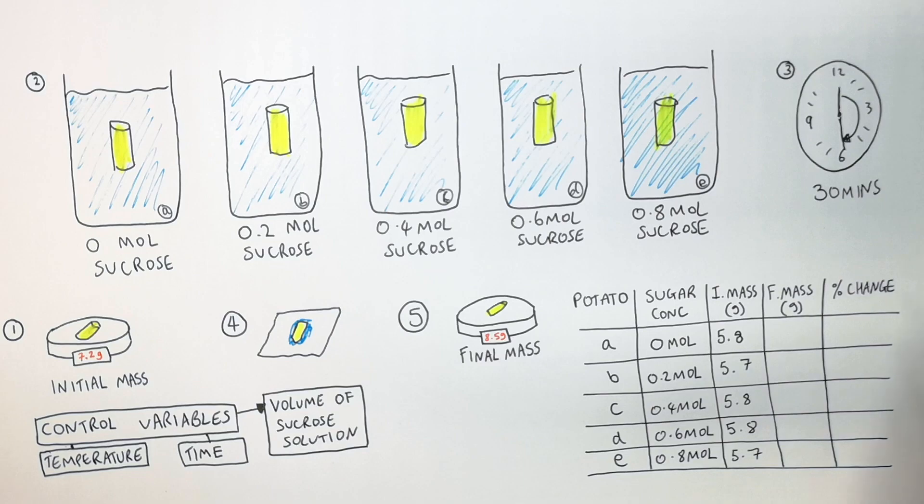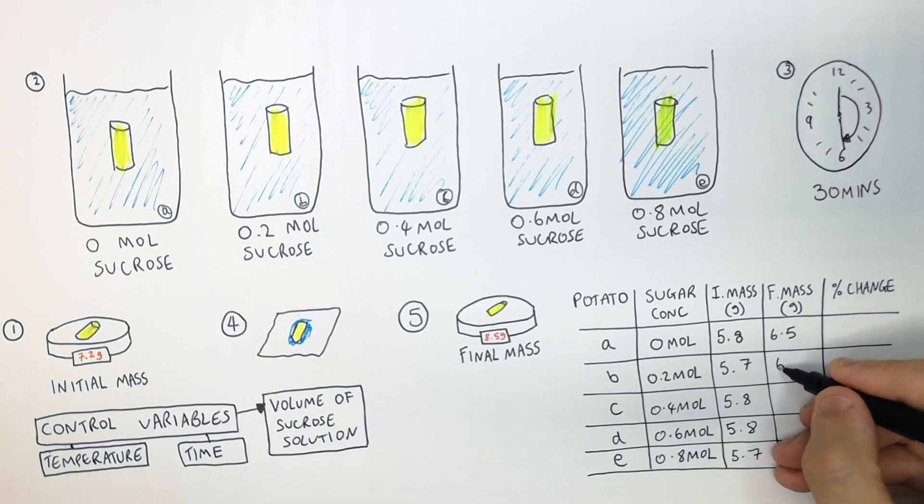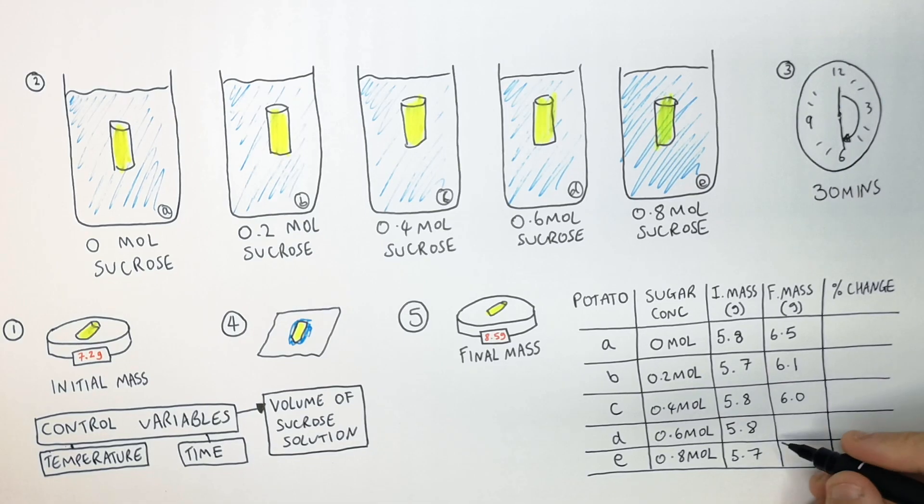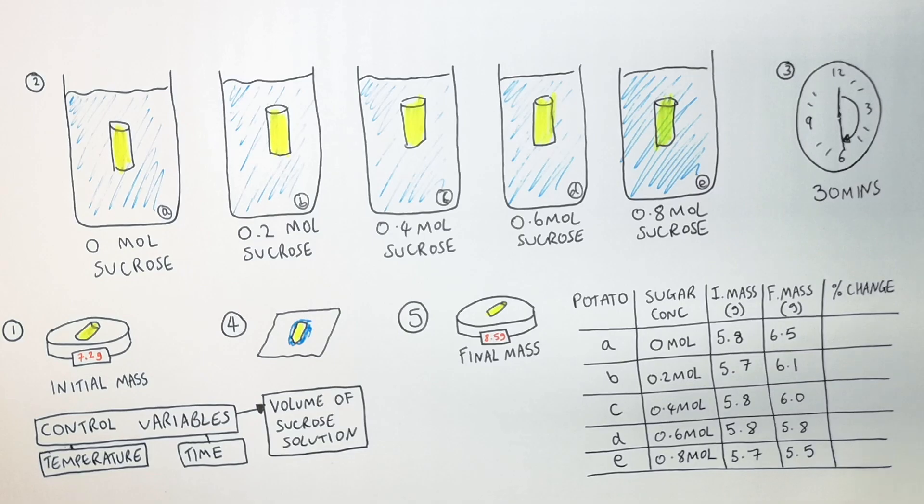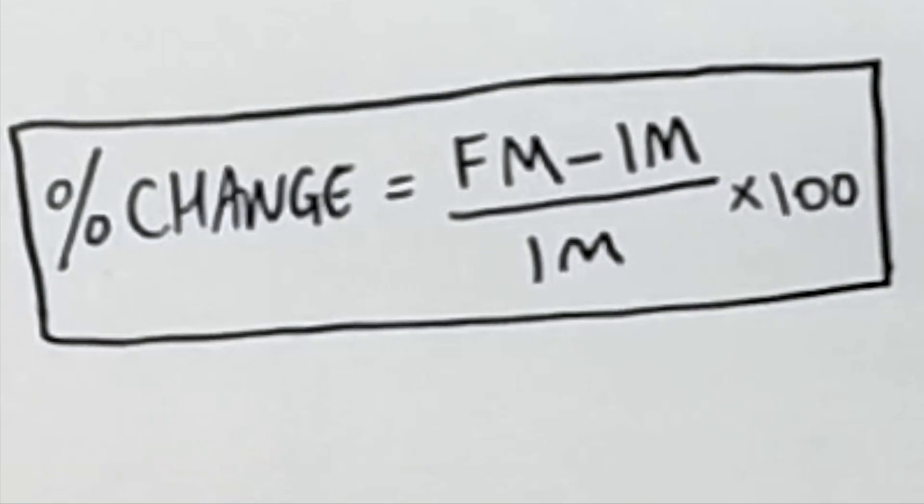However, the final masses will all be different. This is because the potatoes have been in different sugar concentrations. So as you can see here, we have a range of results from 6.5 grams to 5.5 grams for the final mass. So we now use the equation percentage change equals final mass minus initial mass divided by initial mass times by 100 to calculate the percentage change in mass of the potatoes.